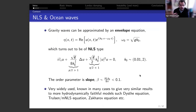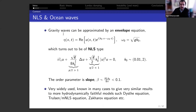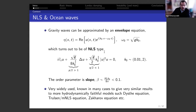NLS appears in ocean waves as an envelope equation. In a 1D situation where waves propagate in one direction, x is space along the direction of propagation, and the sea surface elevation η(x,t) is real-valued but can be described through a complex-valued envelope on a frame of reference traveling with the wave. It is well known that through asymptotics, the envelope to leading order satisfies a cubic NLS equation.